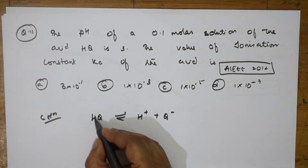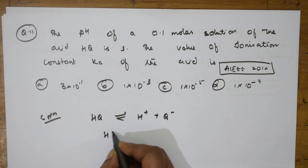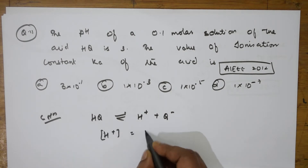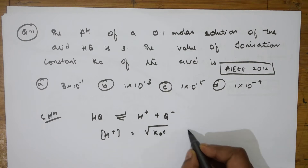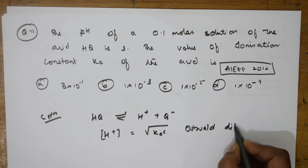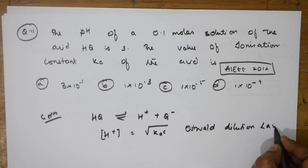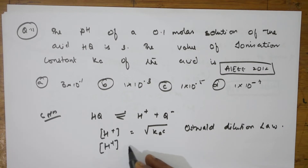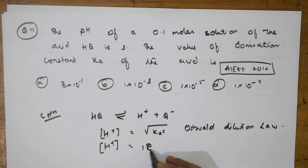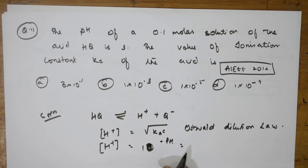Ka — so let me write H⁺ is equal to root of Ka times c. This comes from Ostwald dilution law. Why did I take this? Because I need Ka. From the dilution law, we know H⁺ concentration relates to Ka and concentration c.